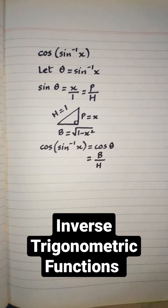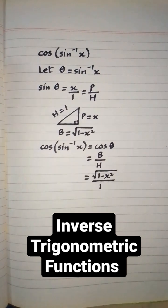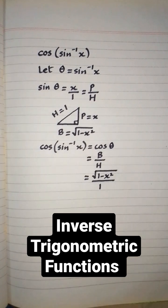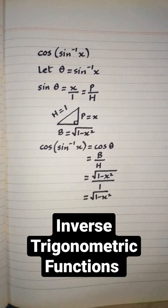And cos theta is base upon hypotenuse. So we have square root of 1 minus x square upon 1, which is equal to square root of 1 minus x square.